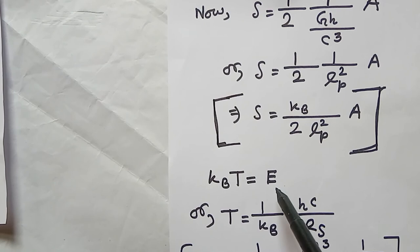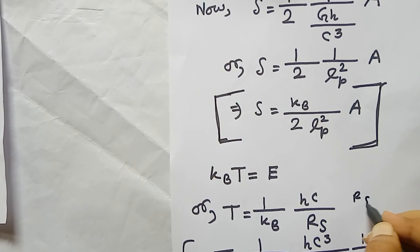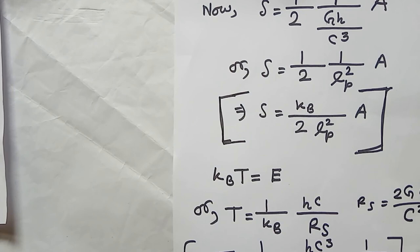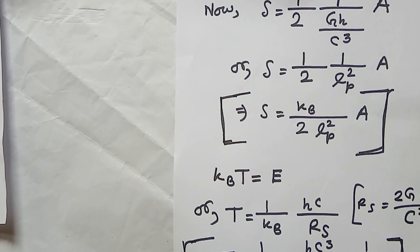We know the Schwarzschild radius rs equals 2GM divided by c squared. Substituting this value of rs, we derive that T equals hc cubed divided by (2G times M times kb). This is the relation between the mass and temperature of the black hole, and together with the entropy-area result, this completes the Hawking-Bekenstein derivation.